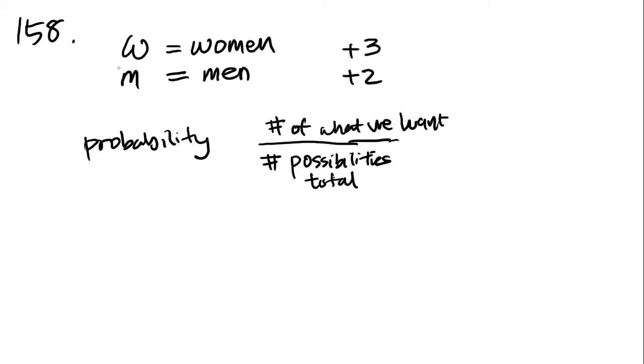What we want over the total number of possibilities. In this case, we're picking people out of this group that we don't really know how big it is. We just know there's W women plus three and M men plus two. We're looking for the probability that a woman is selected. So the numerator is going to be W for the number of women plus three.